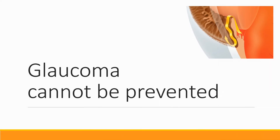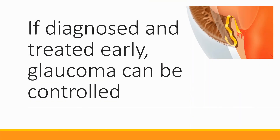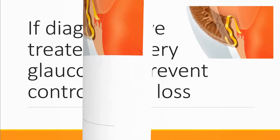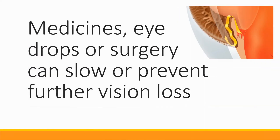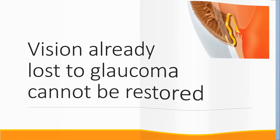Currently glaucoma cannot be prevented, but if it is diagnosed and treated early it can usually be controlled. Medicines, eye drops, or surgery can slow or prevent further vision loss. However, vision already lost to glaucoma cannot be restored. Even with treatment, about 15% of people with glaucoma become blind in at least one eye within 20 years.